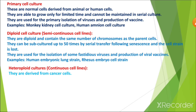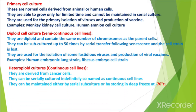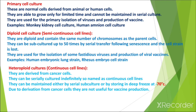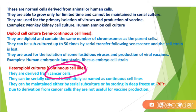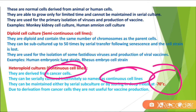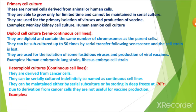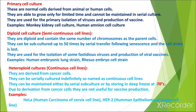Continuous cell lines are derived from cancer cells and can be serially cultured indefinitely, hence the name. They can be maintained either by serial subculture or by storing in deep freezing at minus 70 degrees Celsius. Due to their derivation from cancer cells, they are not useful for vaccine production. Examples are the HeLa cell line and HEp-2 cell line.